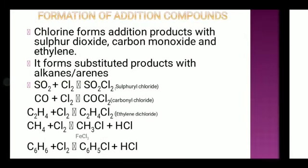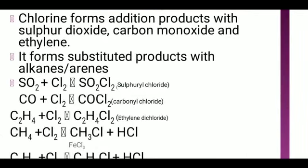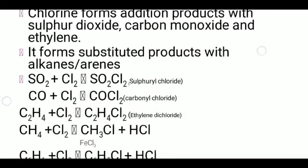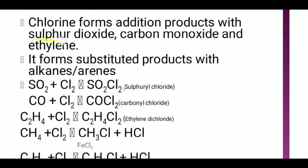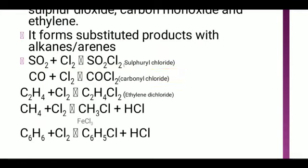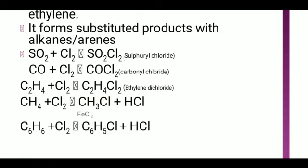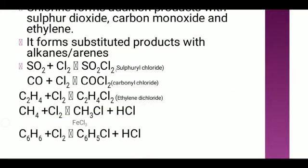Formation of addition compounds: chlorine gives addition compounds. For example, chlorine combined with SO2 gives sulfuryl chloride, and with carbon monoxide gives carbonyl chloride. The chemical reactions are: SO2 plus Cl2 gives SO2Cl2 (sulfuryl chloride); CO plus Cl2 gives COCl2 (carbonyl chloride); and with ethylene: C2H4 plus Cl2 gives C2H4Cl2 (ethylene dichloride).